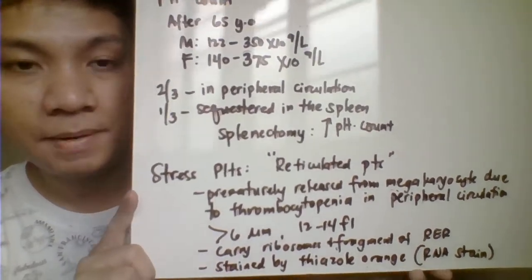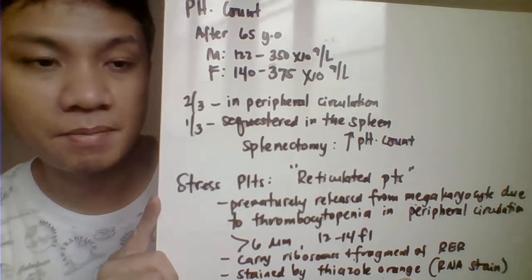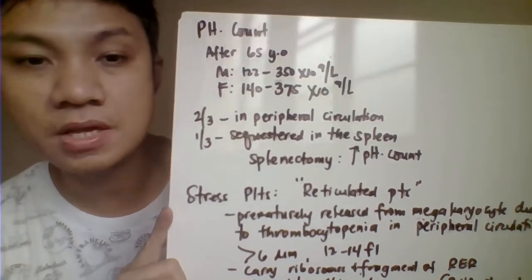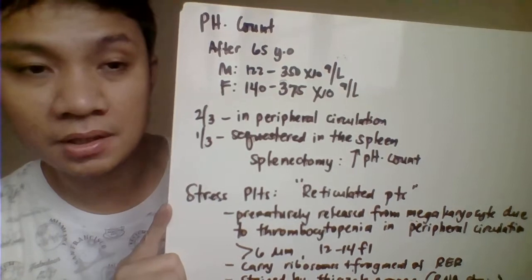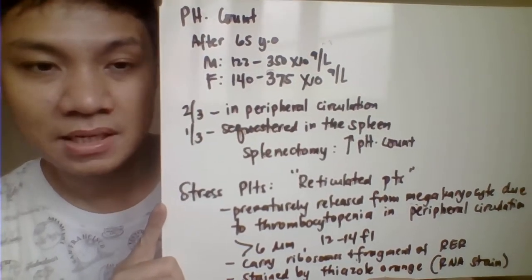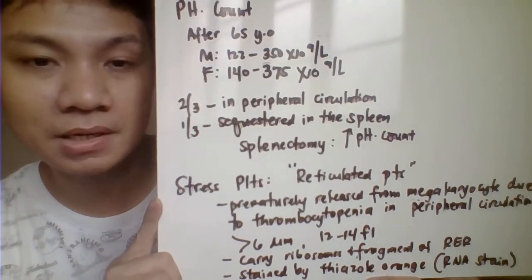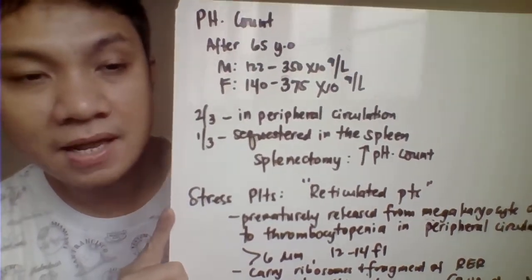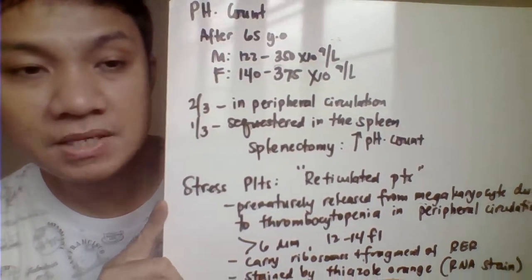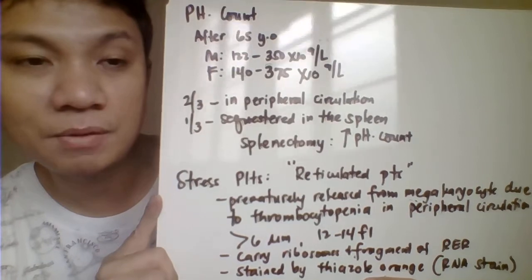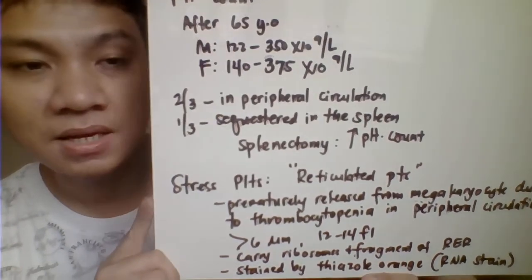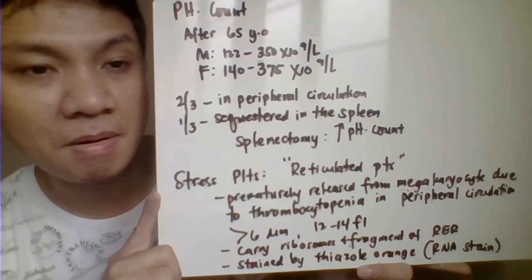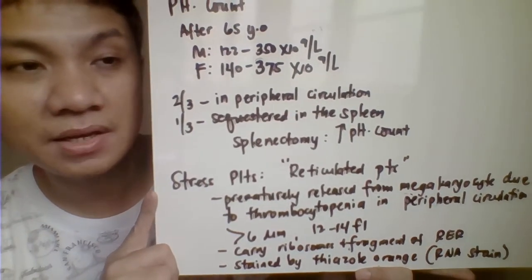The normal platelet count is 150,000 to 400,000. However, as people grow older — especially past 65 years old — the platelet count decreases. For males, it decreases to 122,000 to 350,000, and for females to 140,000 to 379,000. Interpretation should be correlated with the patient's age so it is not mistakenly identified as thrombocytopenia.